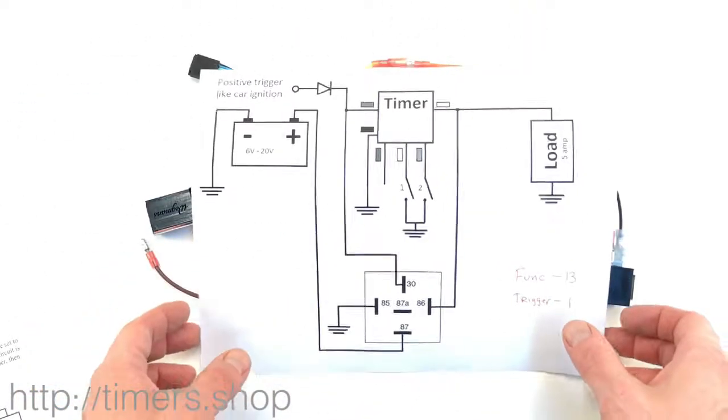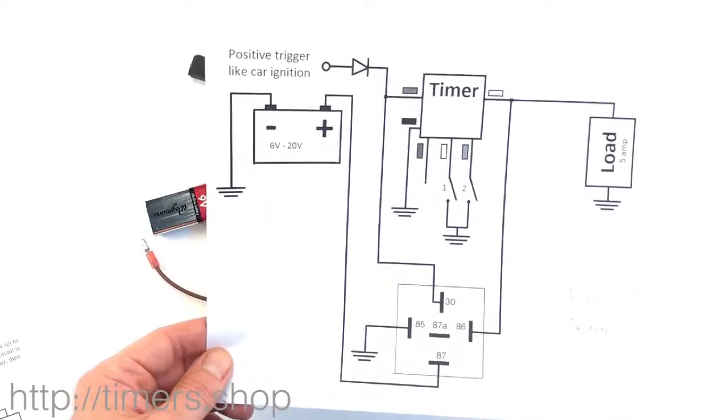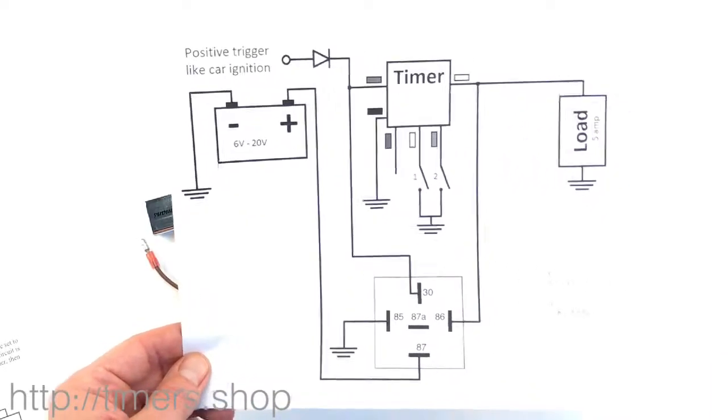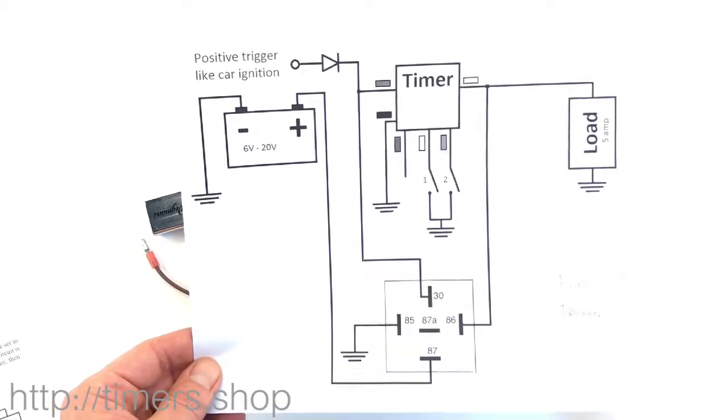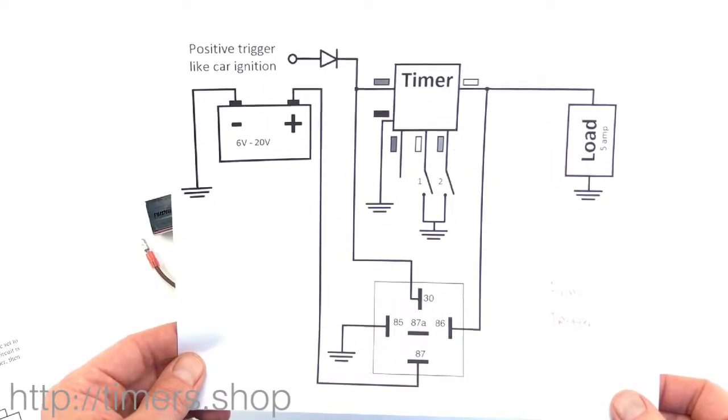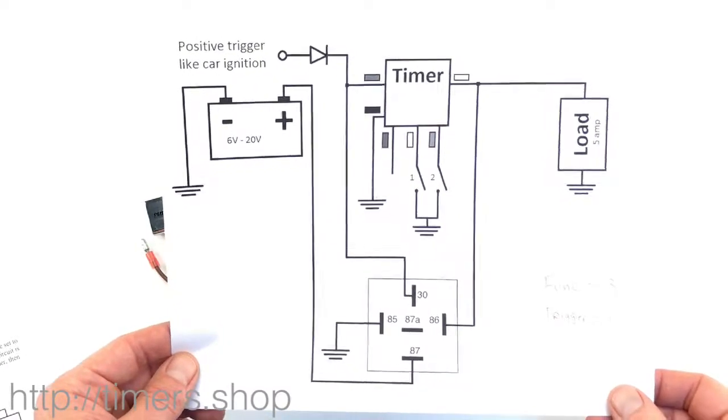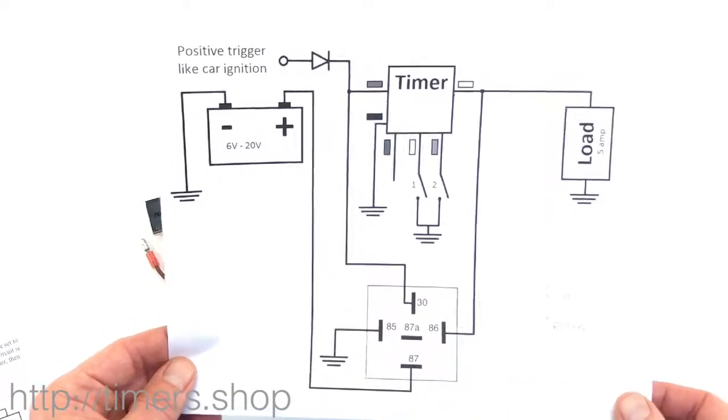Now this circuit is slightly different. This is for example if you want to use it in a vehicle where your ignition wire will start the countdown. So as soon as the ignition is on, I want to turn the timer for let's say five seconds and supply the power to the load for five seconds, maybe five hours, maybe an hour.